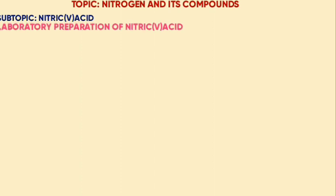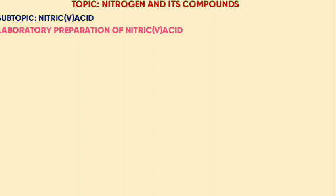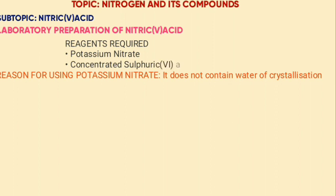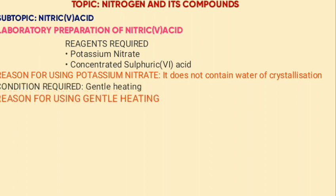First we look at laboratory preparation of nitric acid. The reagents used are potassium nitrate and concentrated sulfuric acid. The reason for using potassium nitrate is that it does not contain water of crystallization. The condition requires gentle heating to minimize thermal decomposition of nitric acid.